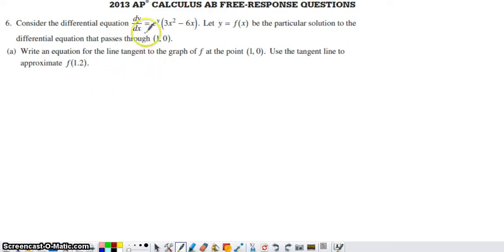In number 6, they give us a differential equation. They tell us that y equals f of x is the particular solution to the differential equation, and that this is a point that's going to be on that graph. 1, 0 is going to be on the graph of f of x.